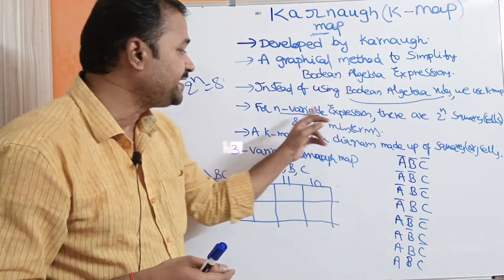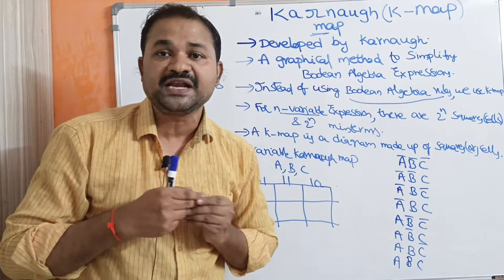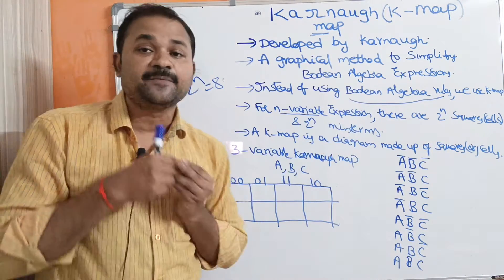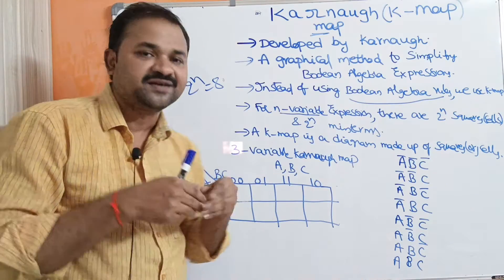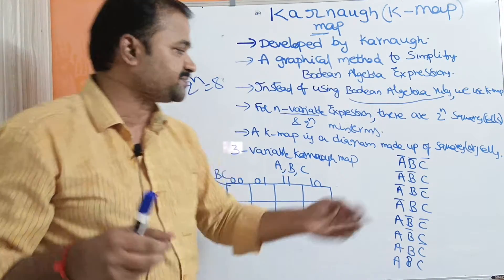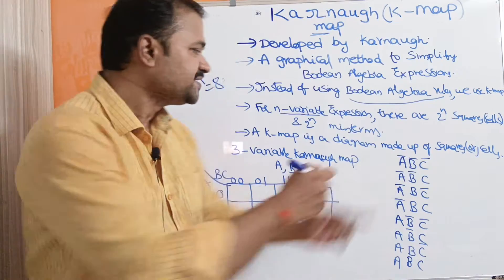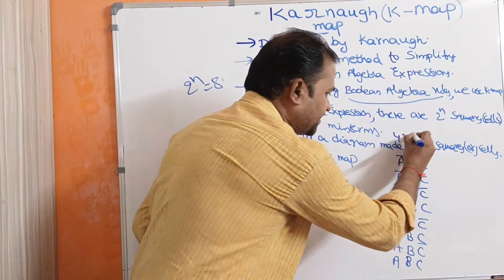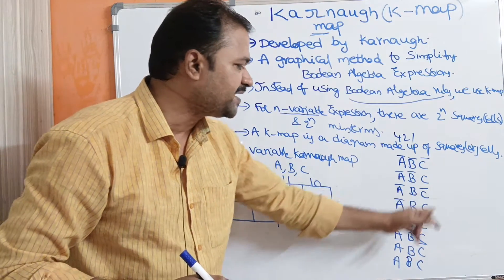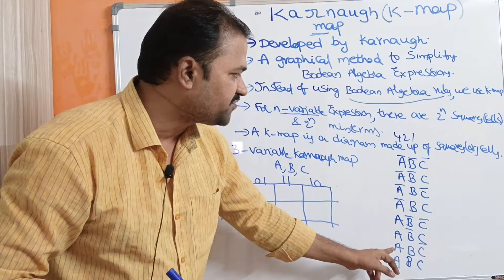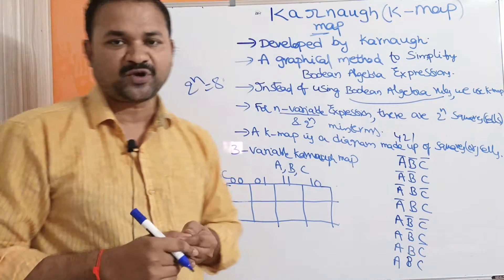One more important point: if there are n variables, then totally we will have 2^n minterms. Here n = 3, so we will have 8 minterms from 0 to 7. For example, 0 means A-bar B-bar C-bar, 1 means A-bar B-bar C, 6 means A B C-bar, and 7 means A B C.